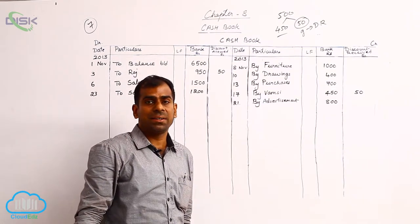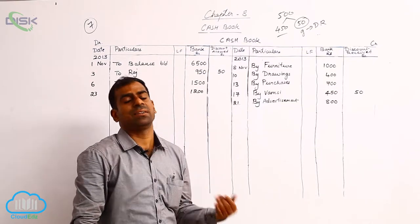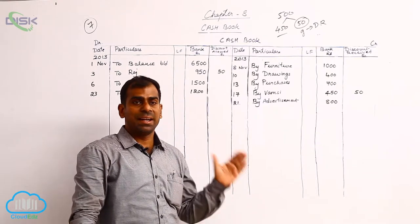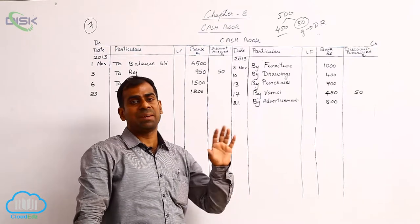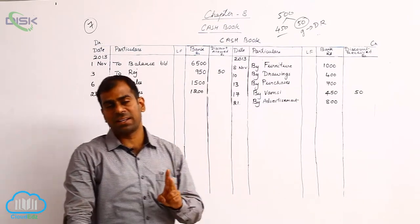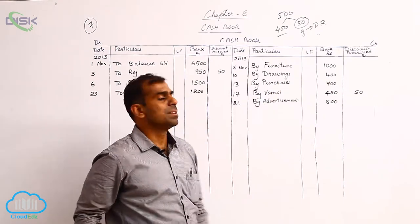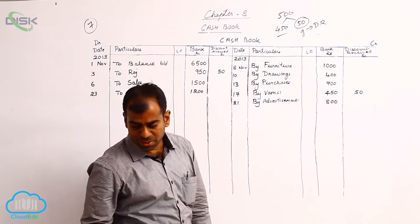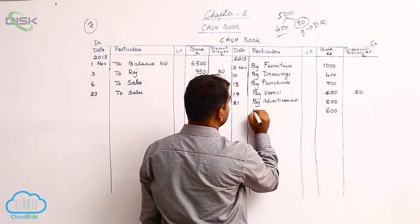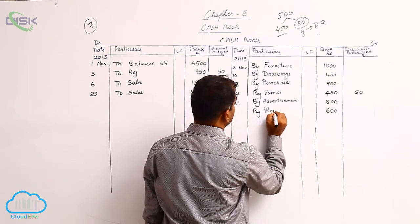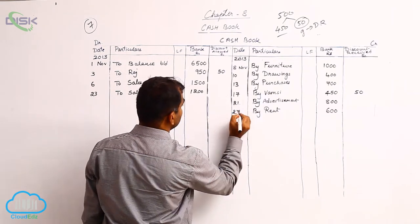Next, on the 27th, rent was paid to the landlord — meaning a check was given to the landlord for rent. The landlord's name is not important since it is a nominal account. The accounts affected are rent and bank. Enter 600 on the credit side, reason being rent, date the 27th.